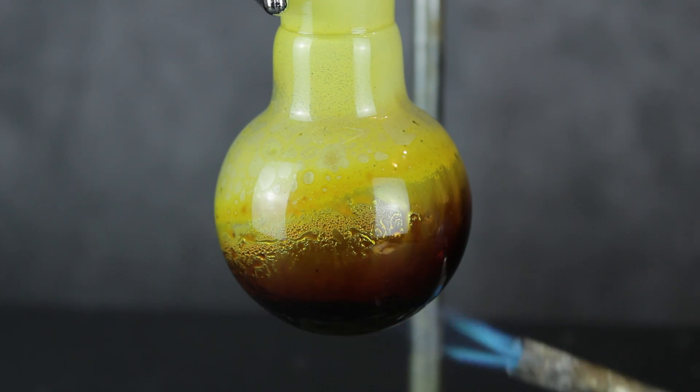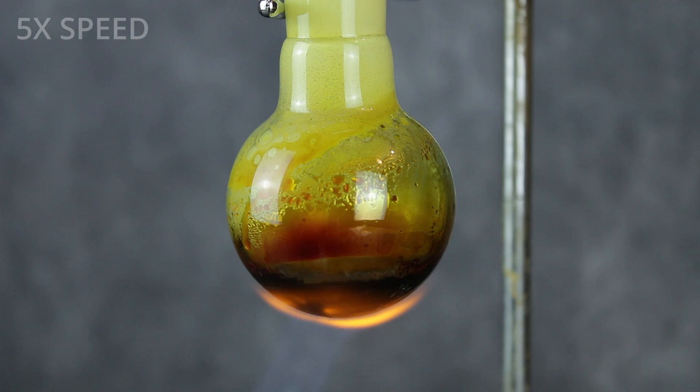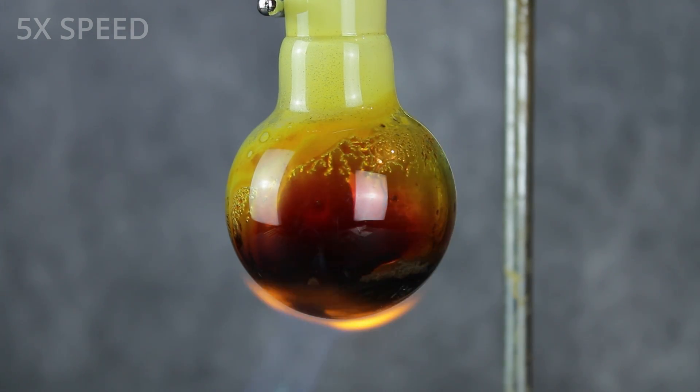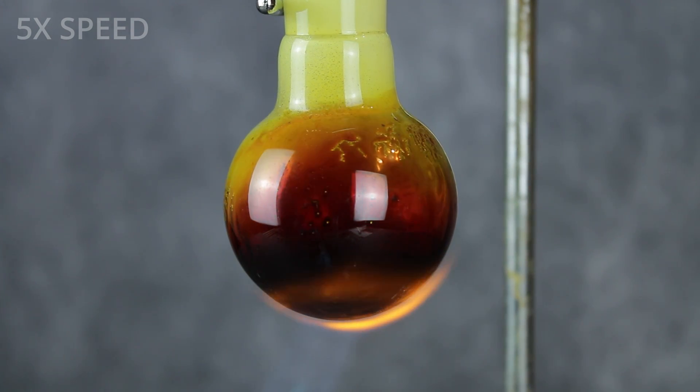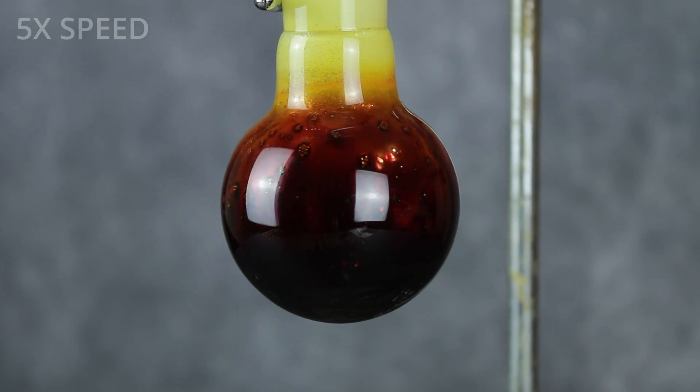As the reaction progressed, a red liquid could be seen refluxing in the flask. Given how strongly I was heating things, this was almost certainly a mixture of sulfur and phosphorus pentasulfide, probably heavier on the pentasulfide since most of the phosphorus seemed to have reacted. I kept refluxing the mixture for a few more minutes and then allowed everything to cool back to room temperature.